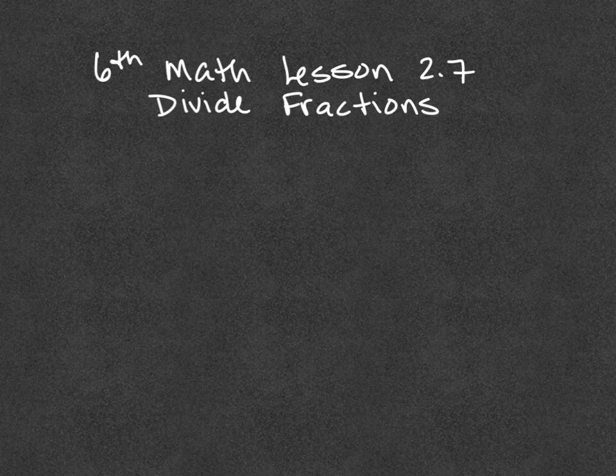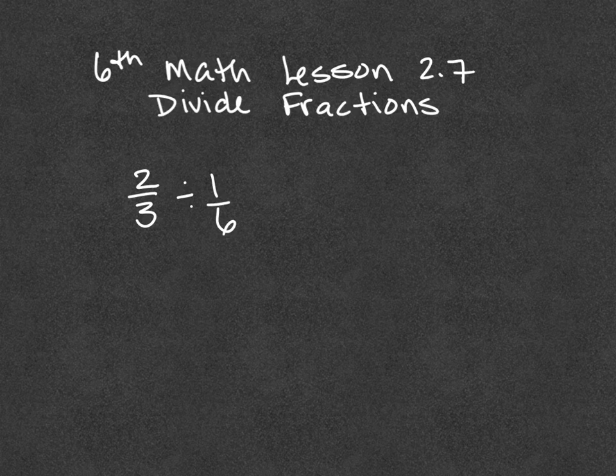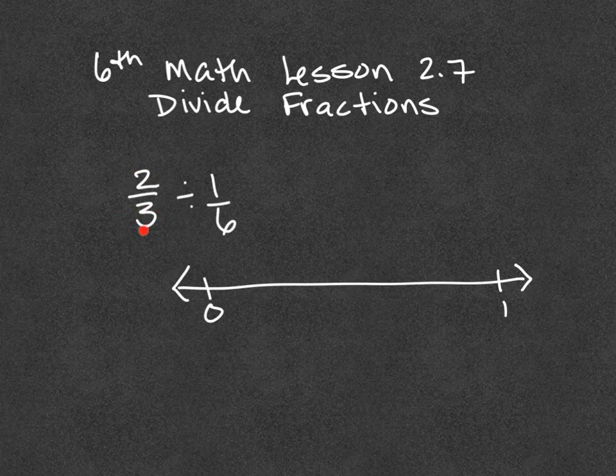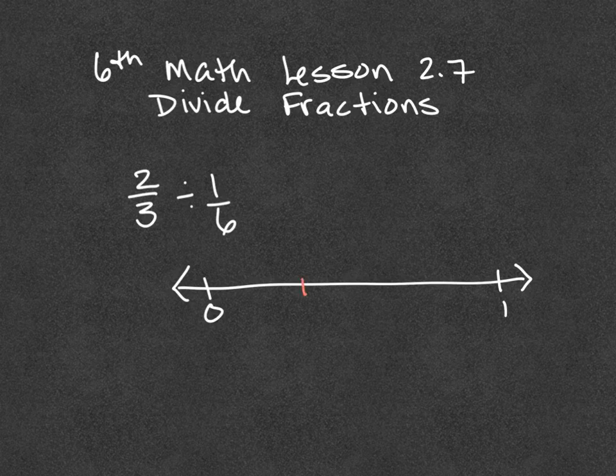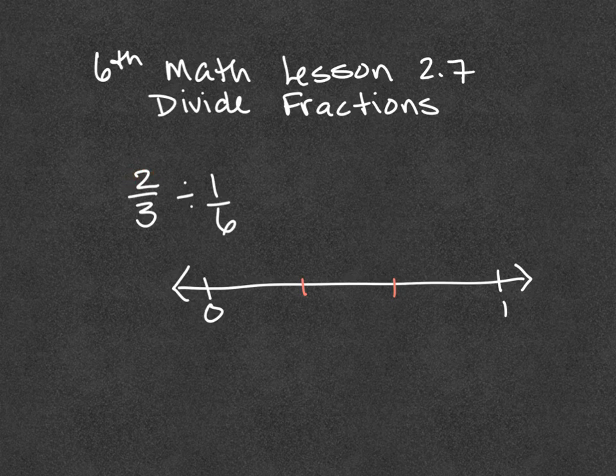So they start off with the number line version: 2/3 divided by 1/6. And it's going to feel a lot like the modeling lesson of 2.5 where they had the candy bars and such. Only now they're doing that as a number line, 0 and 1. And as we know, fractions are the in-betweens. We'll split it into the thirds first, into three equal pieces for this denominator. Pretend those are equal pieces. So I have 1, 2, 3. Two dashes gave me the three sections.